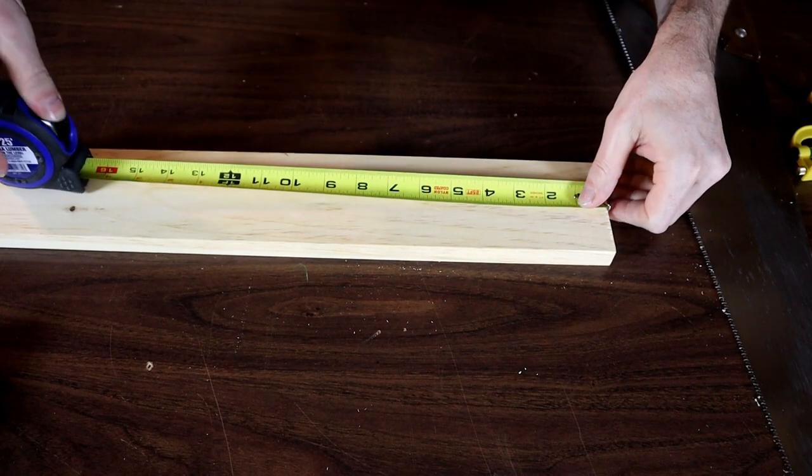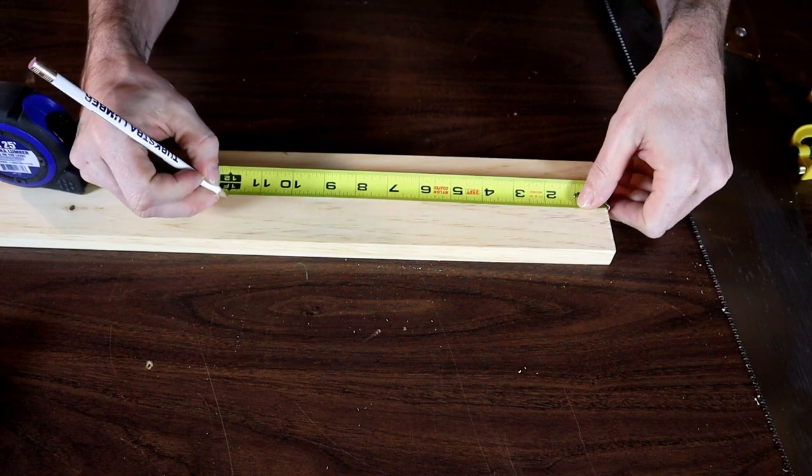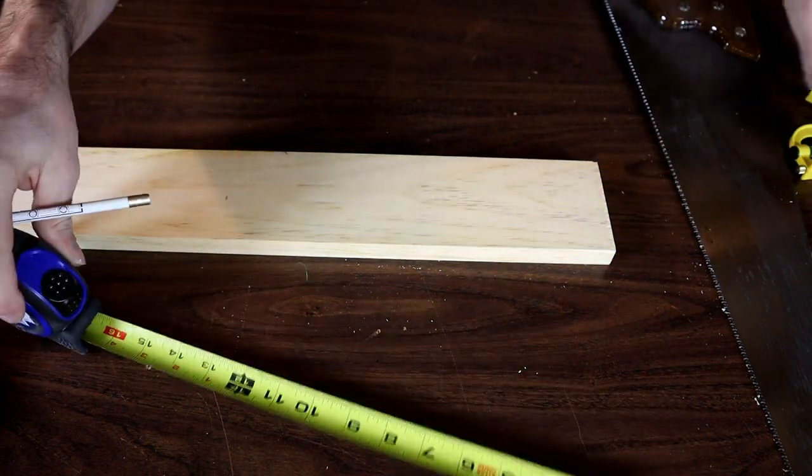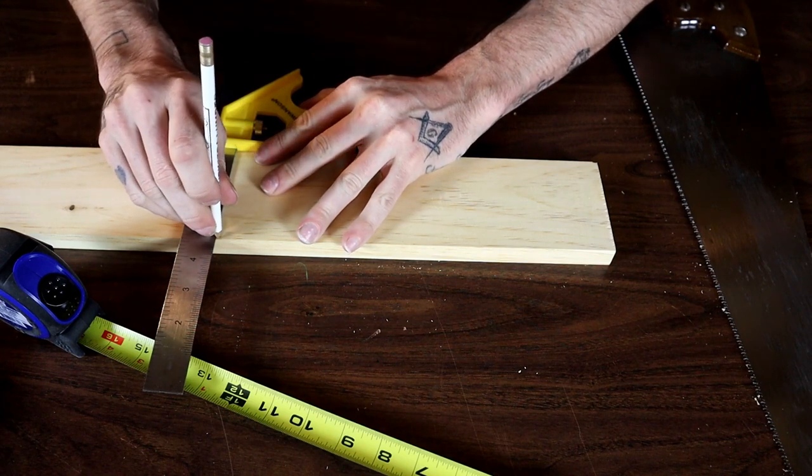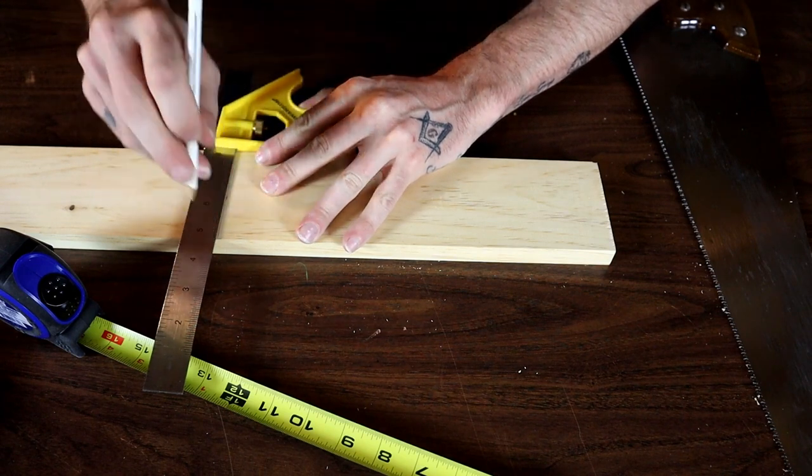Two of these at 12 inches. We'll draw our line across with our square to make sure it's nice and straight to follow. We'll cut those out.